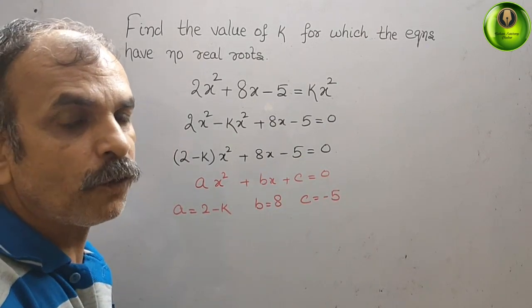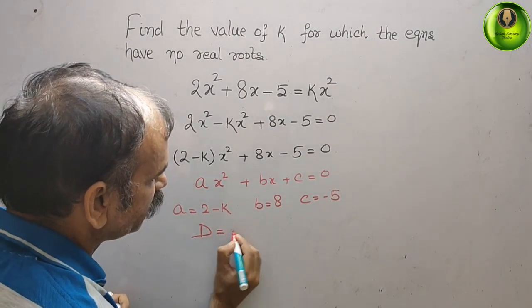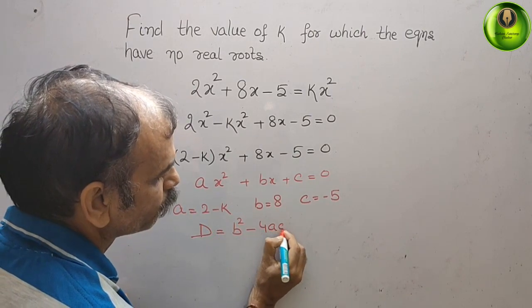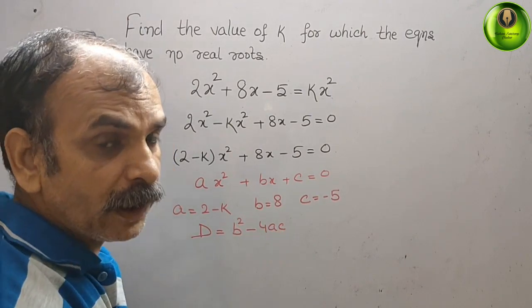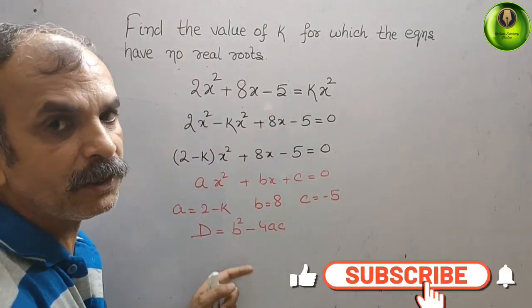Now we will go for the discriminant. The discriminant is nothing but D is equal to b square minus 4ac. But what they have given? They have given no real roots, that means it should be less than 0.